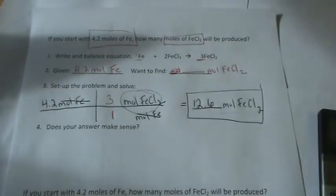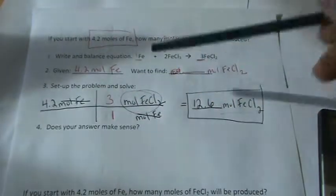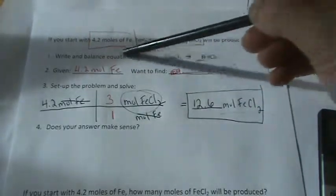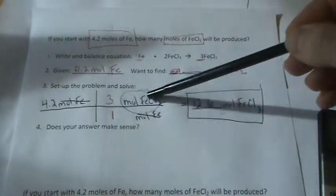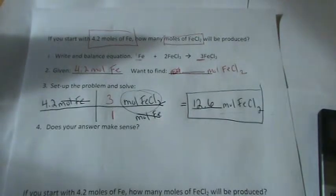So what I did was I started with what I was given, set up the ratio using the coefficients from the balanced equation to cancel out and give me my final answer, and I checked and saw if it made sense. It did, so we're done with this problem.